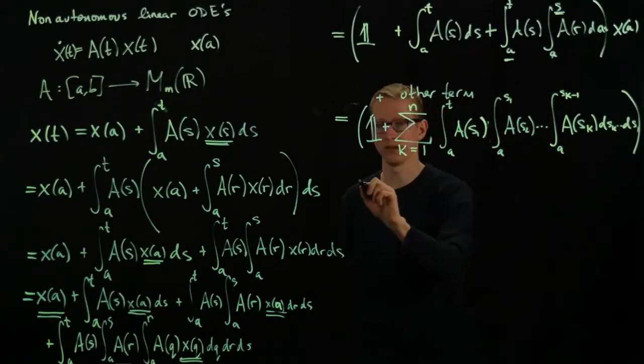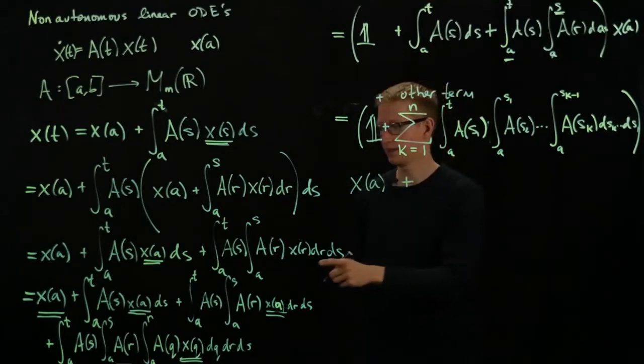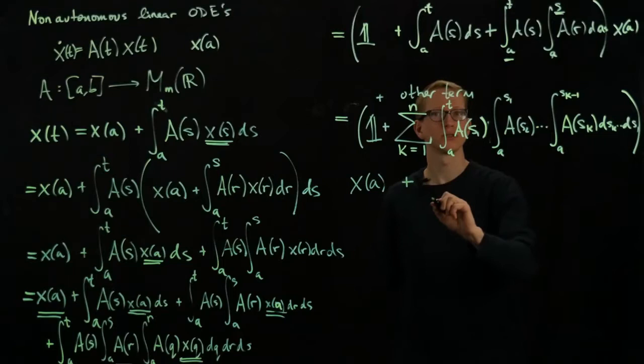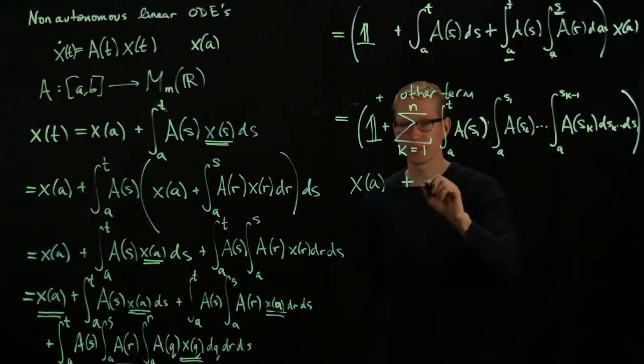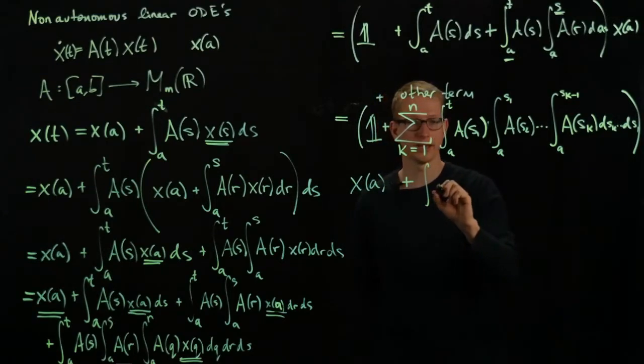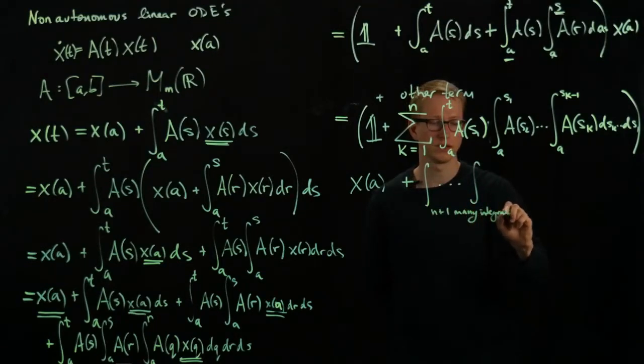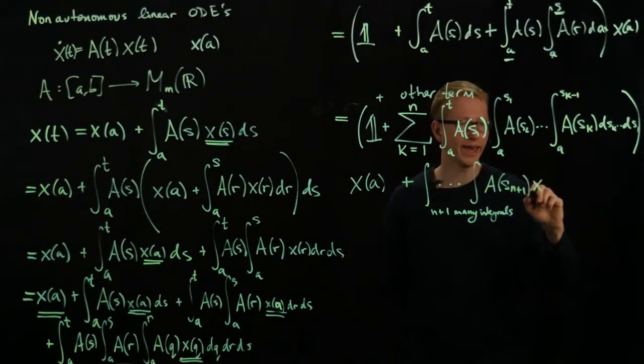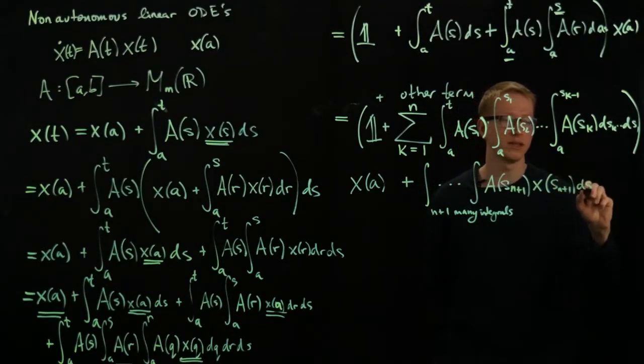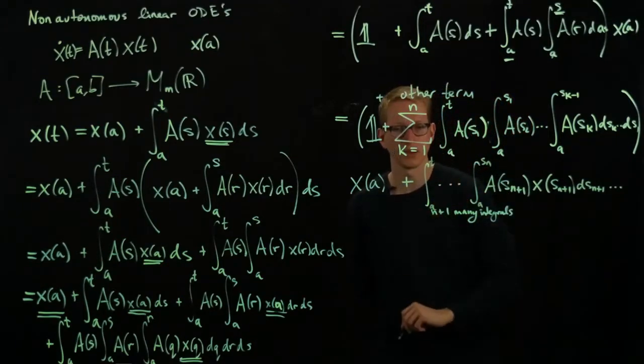All of this applied to our initial condition, which, I don't have space to write it, is x of a, plus the term that's left over has n plus 1 many integrals. So I can write this as, and by the way, s_k, when this equals 0, I just mean t. So plus, and then I have a term that looks just like this, but has n plus 1 many integrals, instead of just n many integrals. But our last term, s_{n+1}, x, s_{n+1} also, ds_{n+1}, all the way down to the last term. And this is s_n, and this is a.